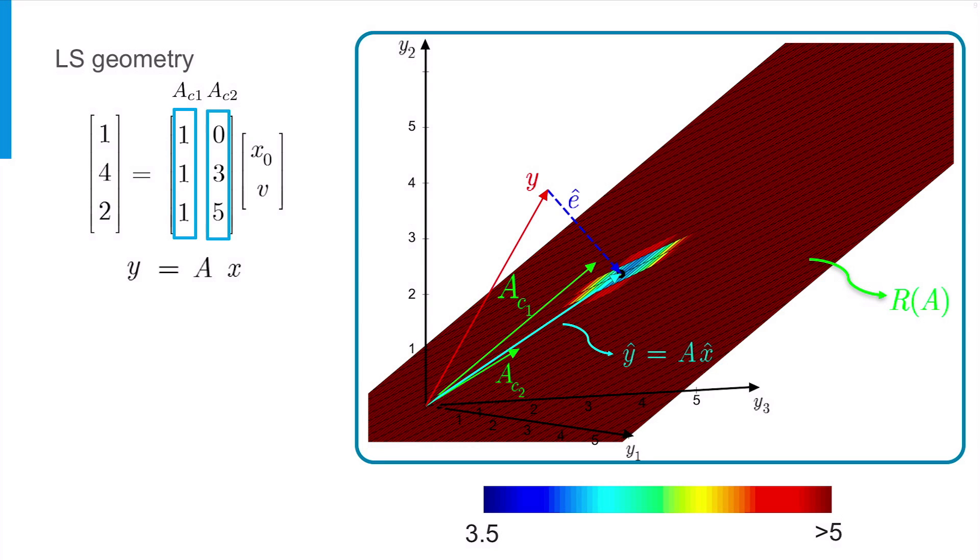In order to really see the minimum distance, let's change the color scale. With this new color scale, all the points on the plane with distance larger than 5 from the observation vector are colored as dark red. We can see that indeed y hat corresponds to the point on the range space of A with the closest distance to the vector y.